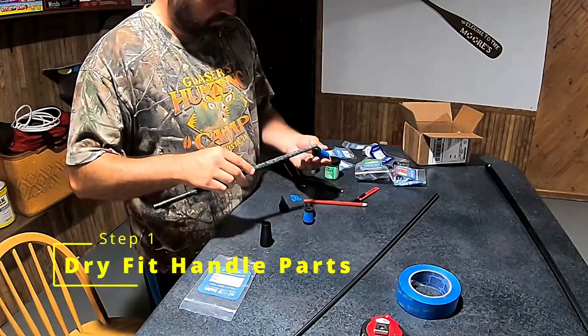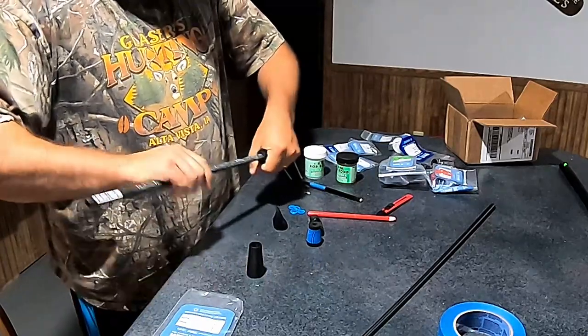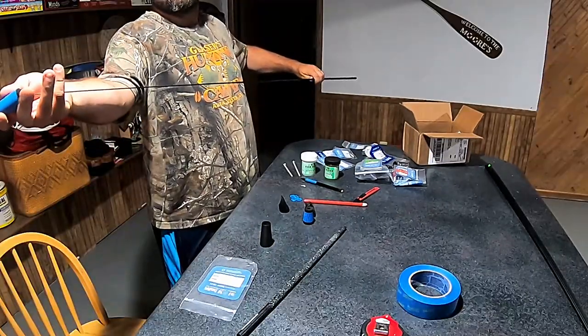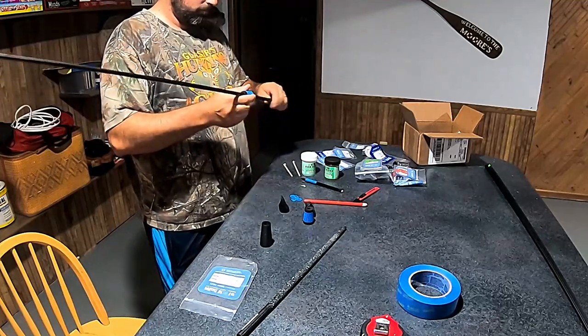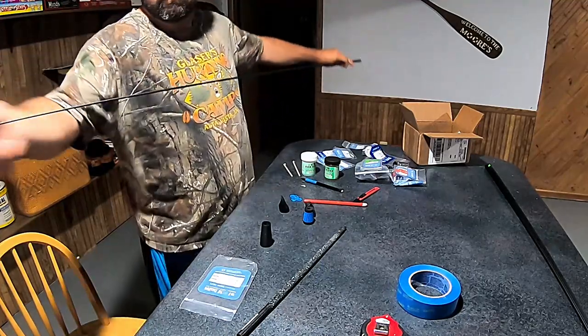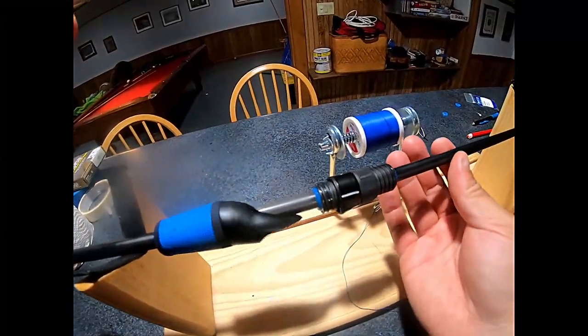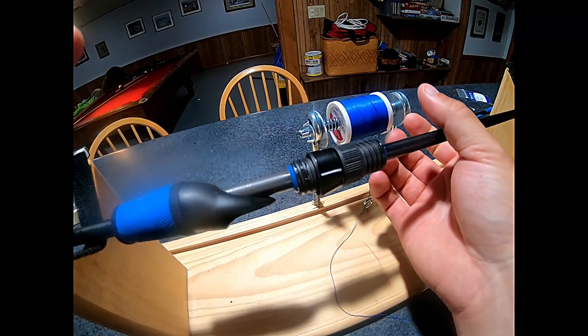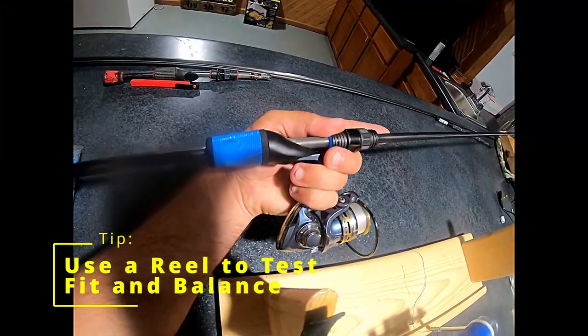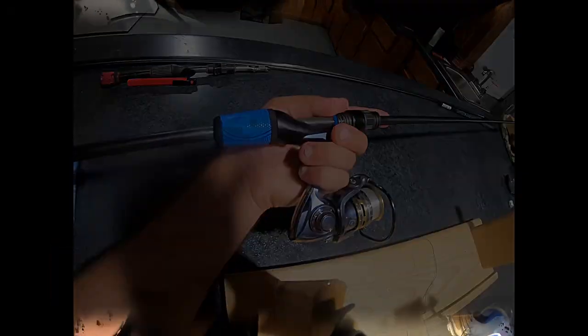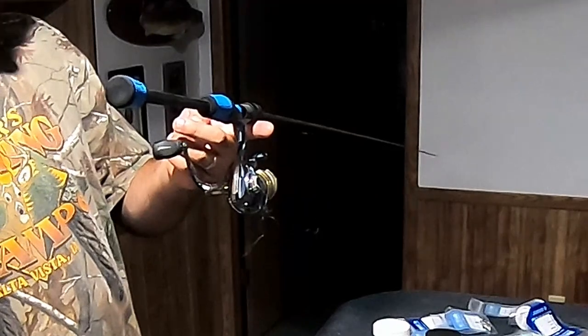Assuming you have your blank and components all picked out, the first step is to start dry fitting your handle components. The way I do that is I gather all my components, lay them out, get a rough idea where I want them, and then start alternating between sliding them onto the rod and reaming them using a reaming tool. You can see me using one here in this video. You can get those from virtually any rod building supplier. You can also get them that fit in your cordless drill, which are very nice.